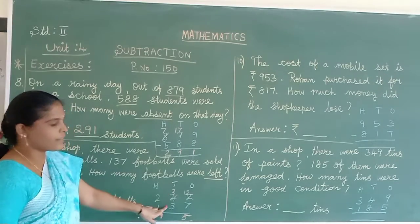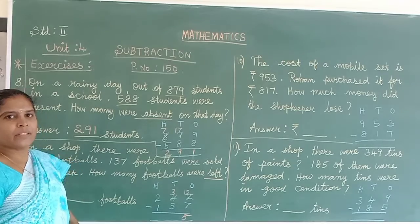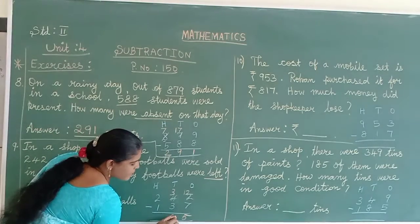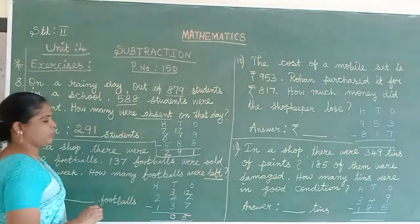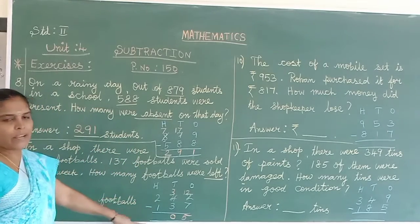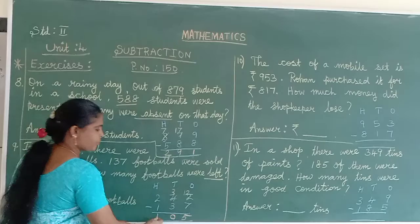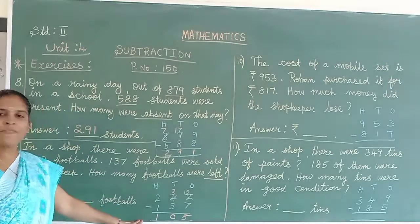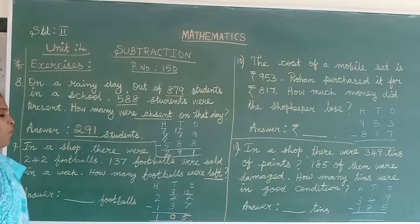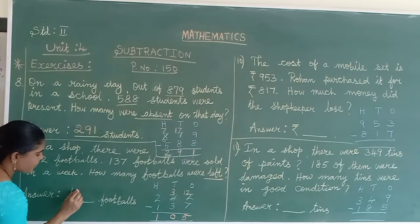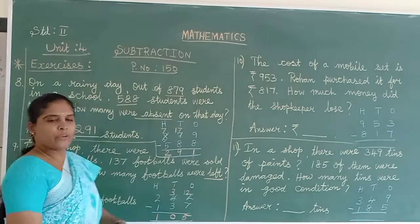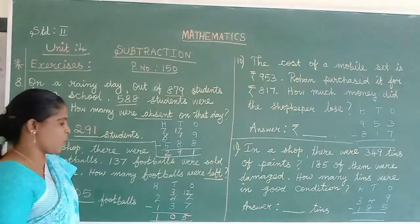Check the numbers: 3, 3, the same number. When the numbers are equal, we will get the answer 0. And 2 minus 1 equals 1. So how many footballs are left in the shop? 105. If you want, again you can do the verification also.